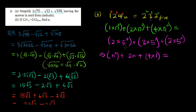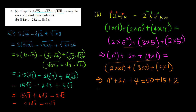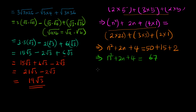For the right side: 2 times 25 is 50, plus 3 times 5 is 15, plus 2 times 1 is 2. So the right side equals 50 plus 15 plus 2, which is 67. Therefore n² plus 2n plus 4 equals 67.